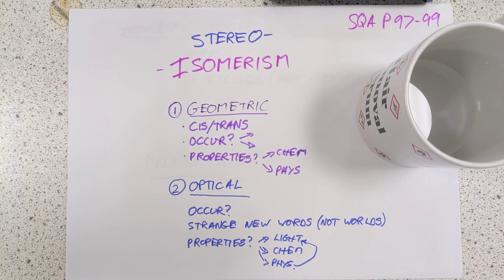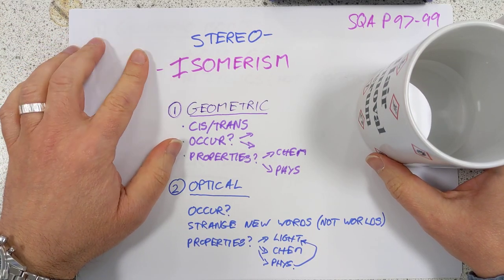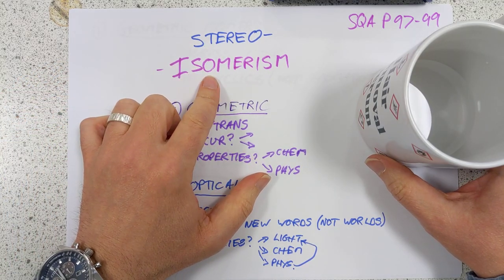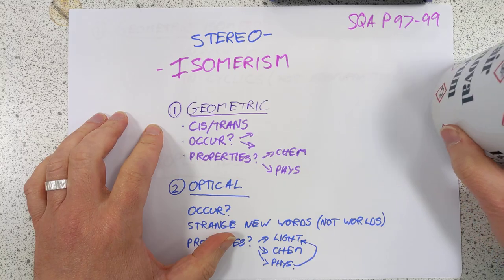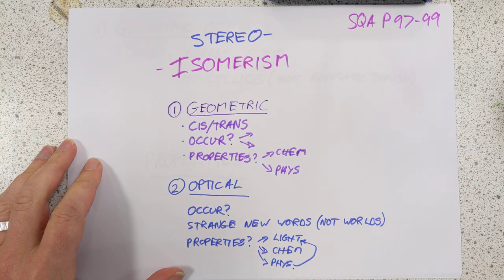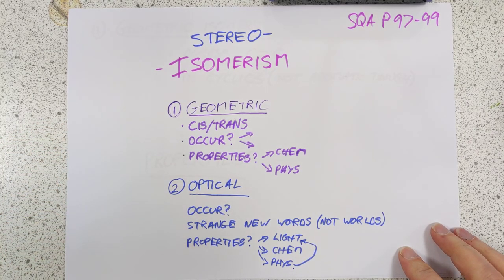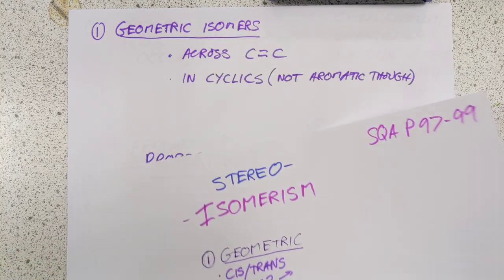Good morning, folks — well, afternoon, actually. It's half past twelve. Welcome back to Advanced Howard Chemistry. We are tackling isomerism today, and to be more specific, we're actually tackling stereo isomerism. Normal isomerism is the boring type where you're unplugging a carbon from one end and popping it somewhere in the middle of the chain. This is a much more technical type. SQA, page 97 to 99. We're going to tackle two different flavours of stereo isomers today: geometric isomers and optical isomers. With no further ado, let's jump into geometric isomerism.